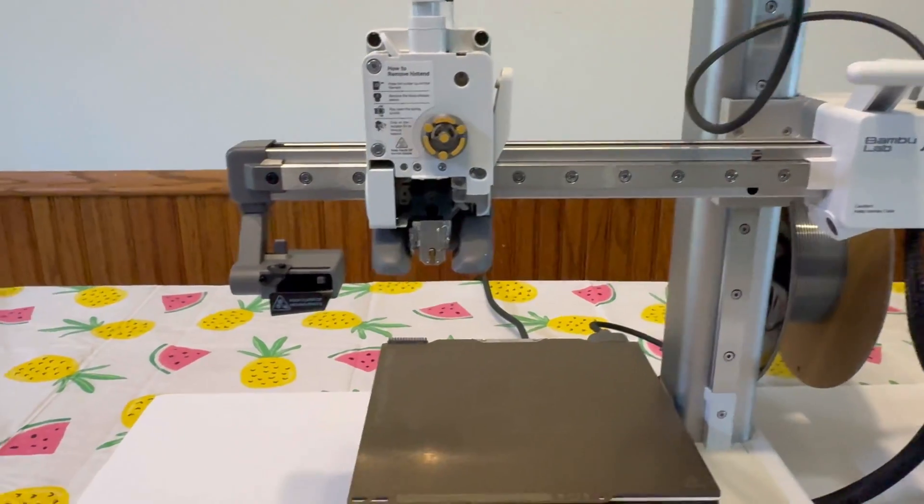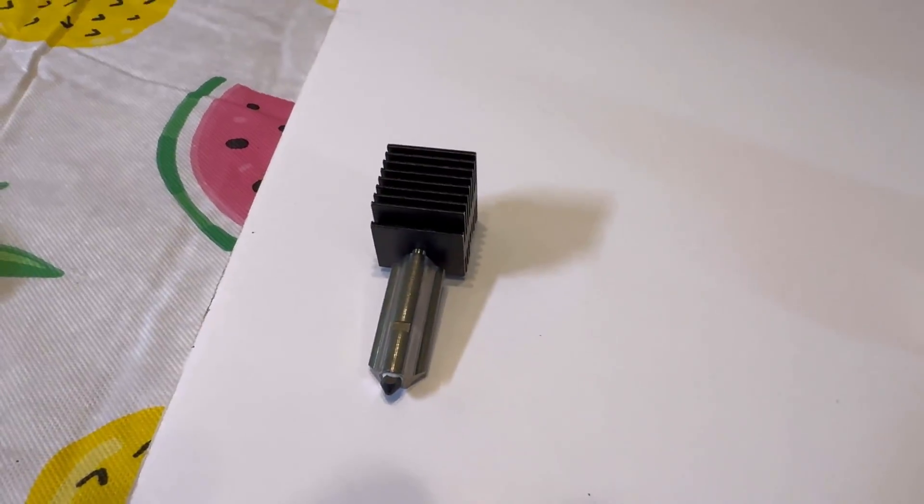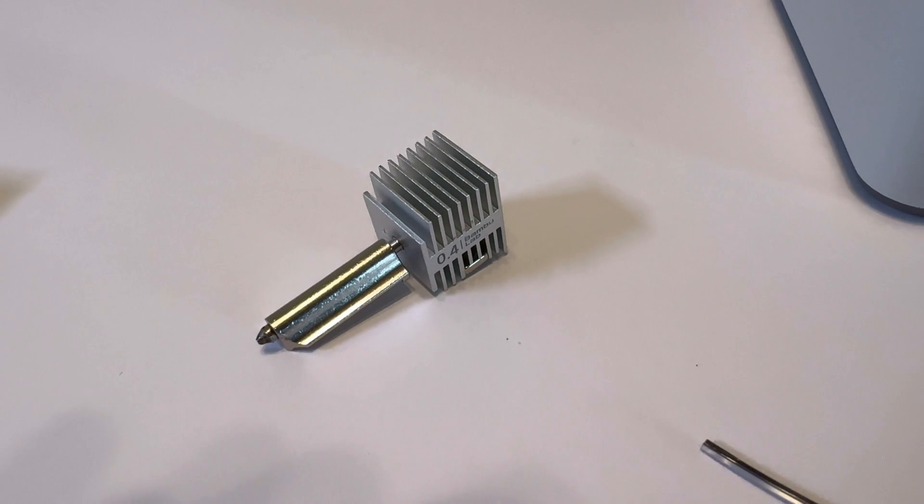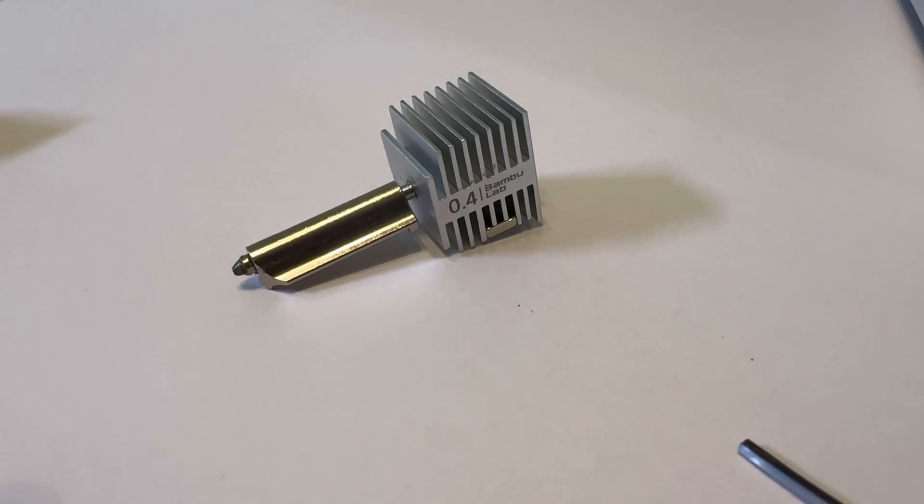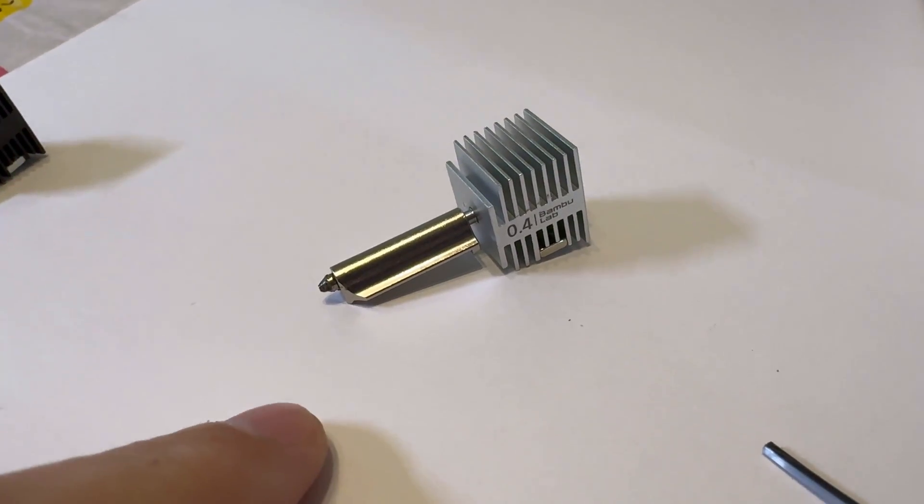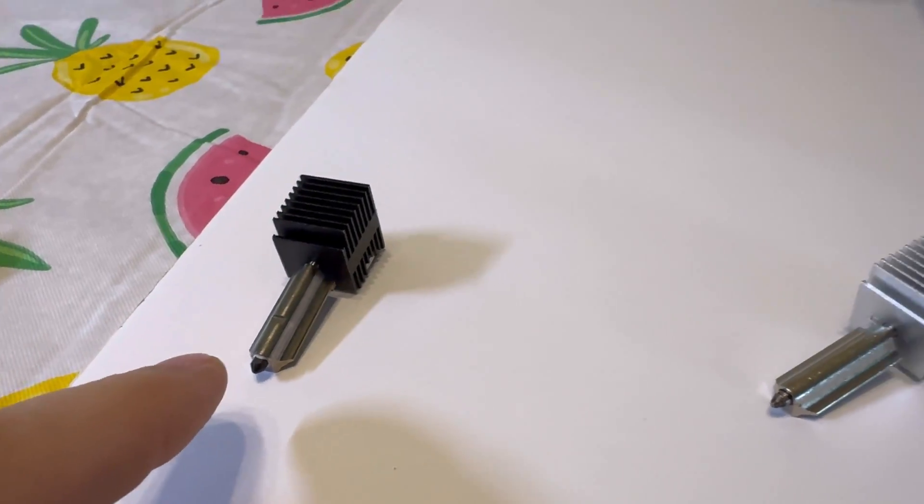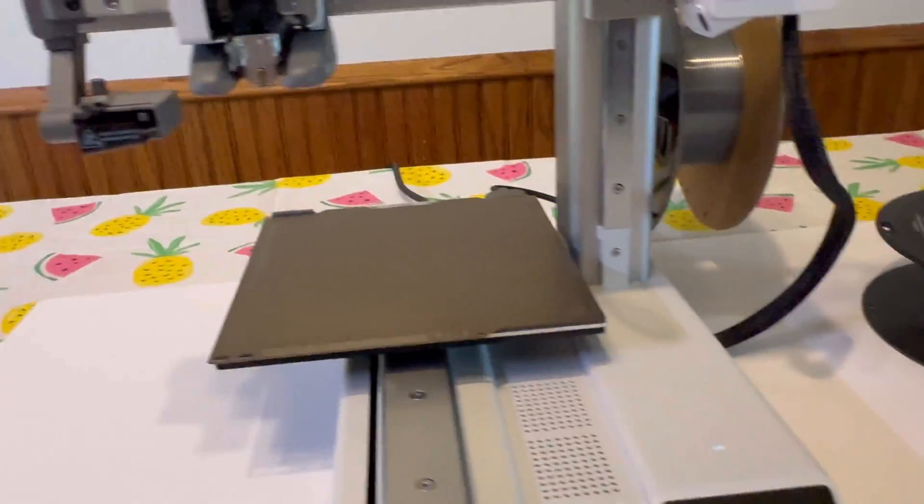So there's a couple things we can do here. You can purchase a new nozzle. They're fairly cheap. I buy them on Amazon. Or you can put your old one back in. Make sure you have the right size. It is recommended that you buy Bamboo Lab. I actually have decent success buying them on Amazon. They're pretty cheap, but that's up to you.